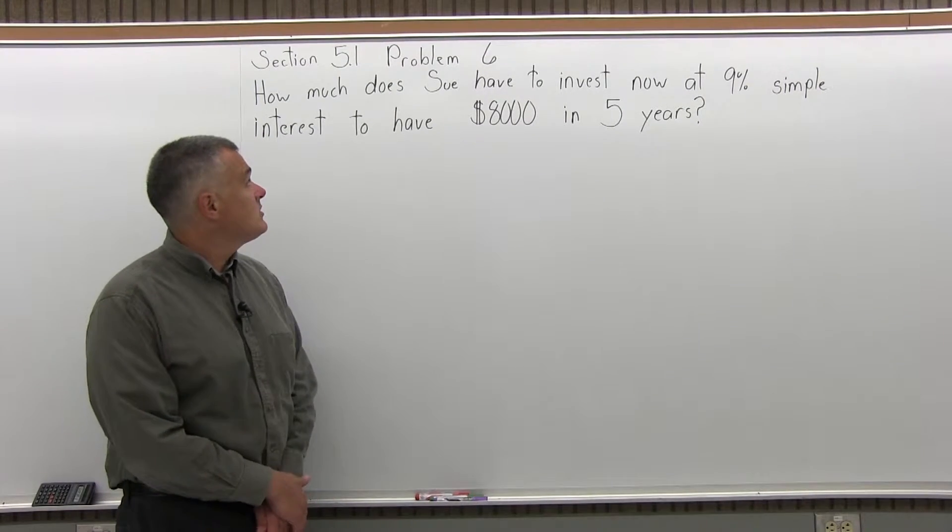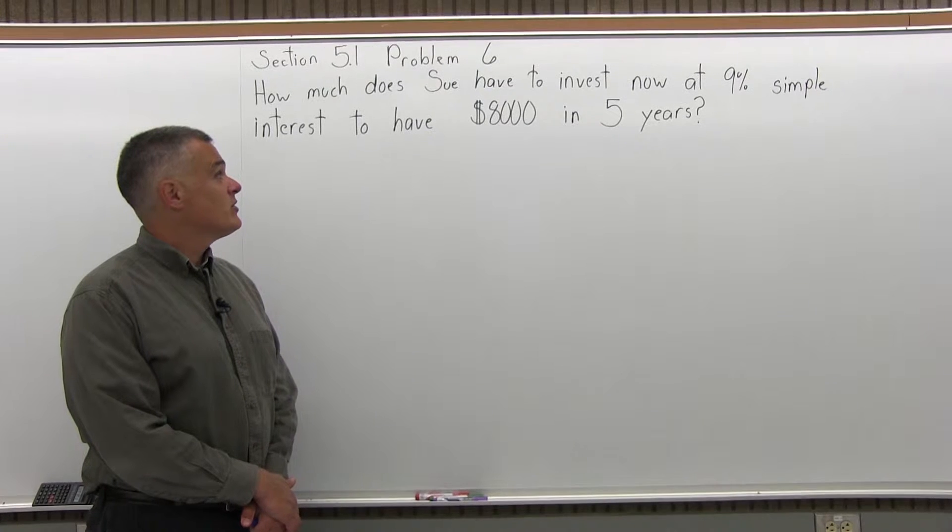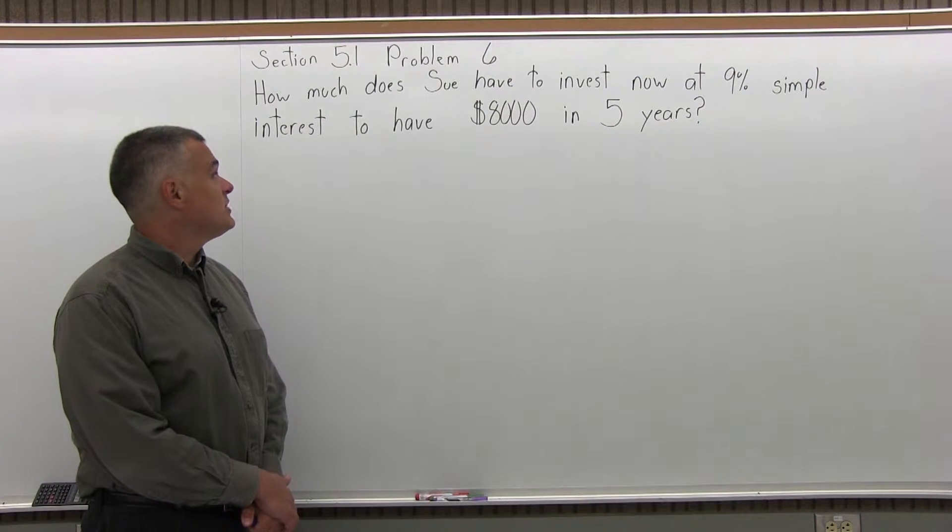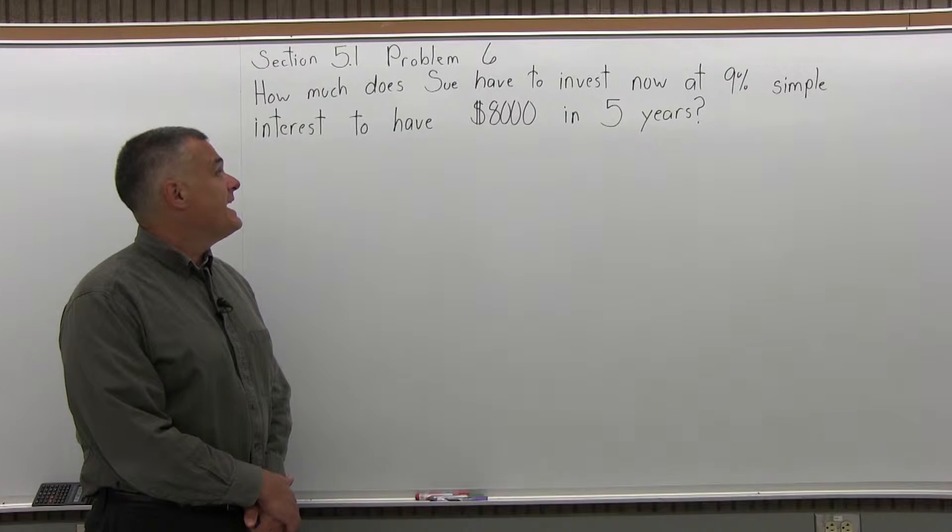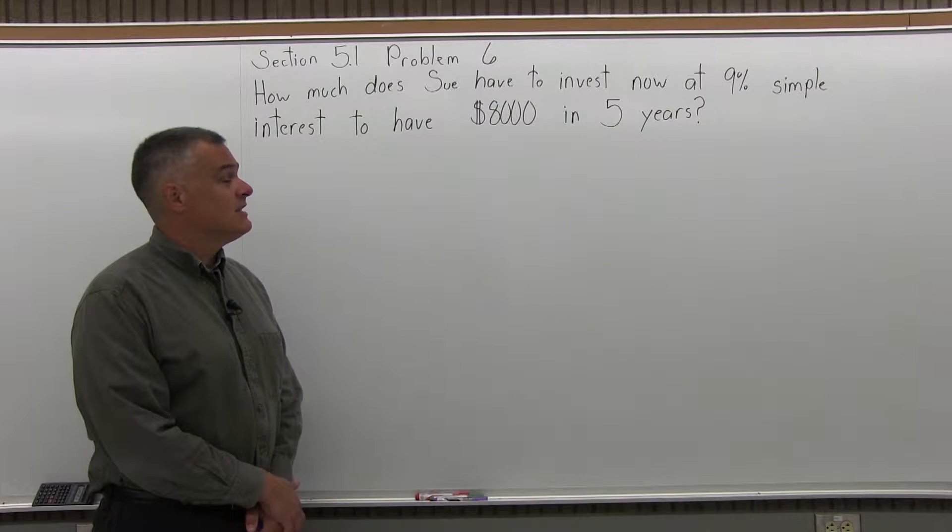This is Section 5.1, Problem 6. It says, how much does Sue have to invest now at 9% simple interest to have $8,000 in five years?